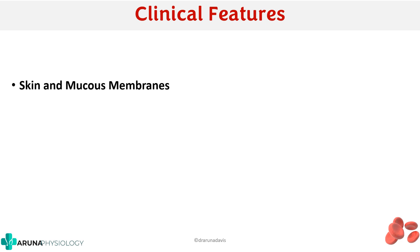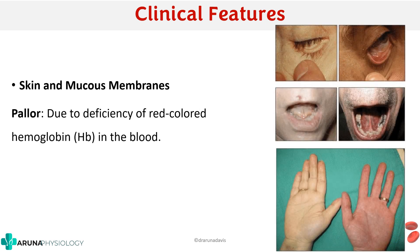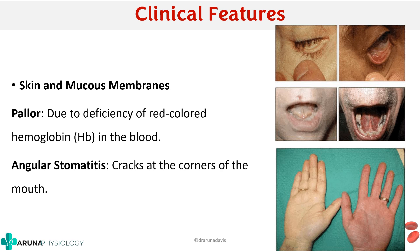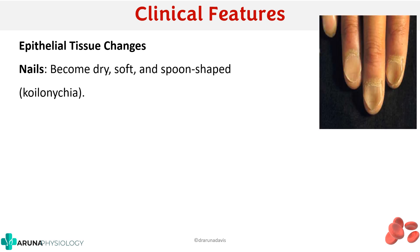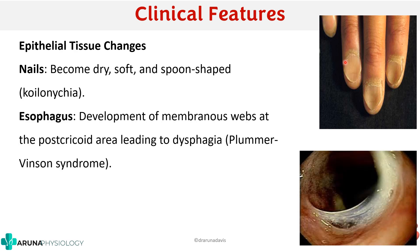Important signs seen in anemia include changes in the skin and mucous membranes. The most common sign is pallor — the lower palpebral conjunctiva will be pale due to deficiency of red-colored hemoglobin. Angular stomatitis, meaning cracks at the corners of the mouth, is also an important sign. Nails become dry, soft, and spoon-shaped — a condition called koilonychia. In the esophagus, membranous webs can develop causing dysphagia, a condition called Plummer-Vinson syndrome.